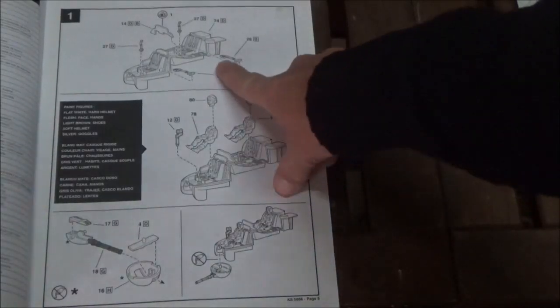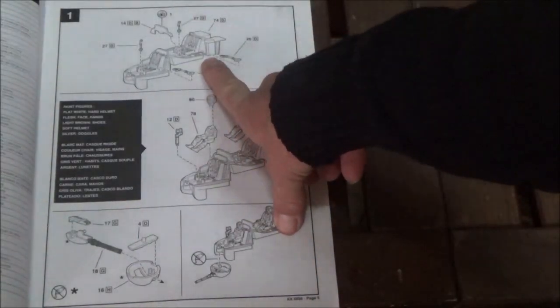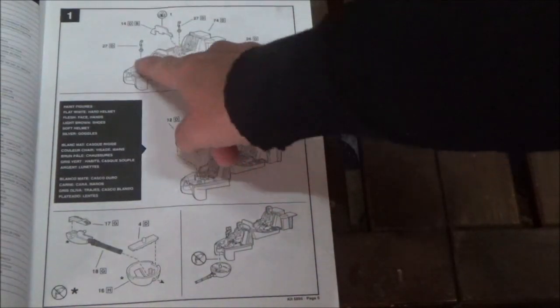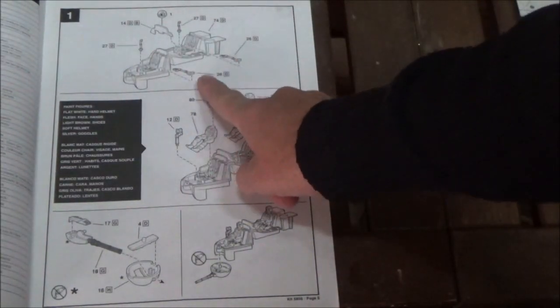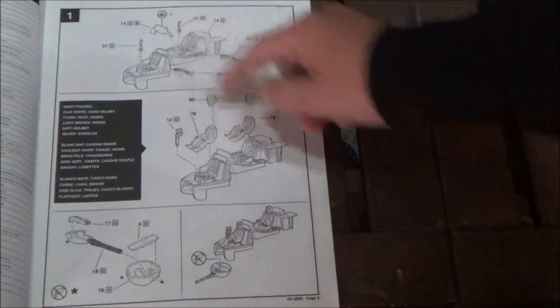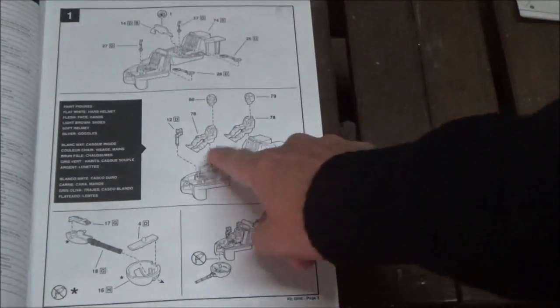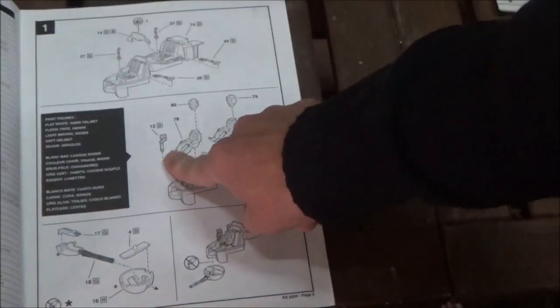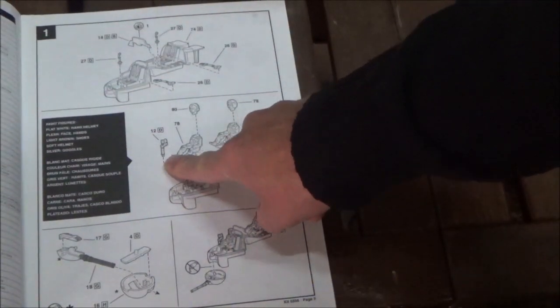Here you can see we start with the cockpit. Most is already in there, the seats and everything. You have two sticks here, the two side sticks, an instrument panel. And here we have a couple figures and the other side stick here.